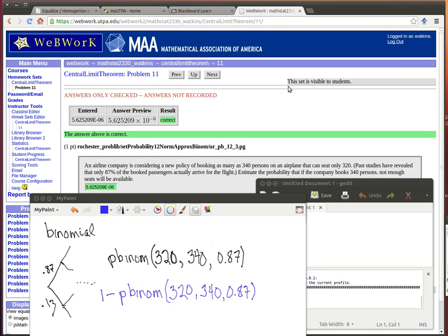They know from past experience that 87% of the booked passengers actually arrive for the flight. So we want to figure out what's the probability that if they really do book the 340 persons, that there will not be enough seats available.